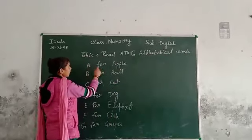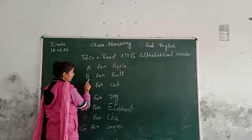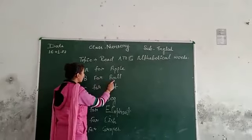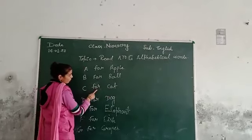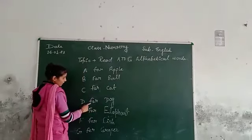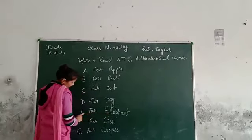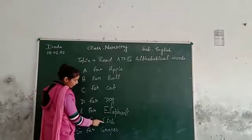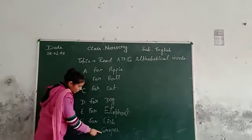Let's read. A for Apple, B for Ball, C for Cat, D for Dog, E for Elephant, F for Fish, G for Grapes.